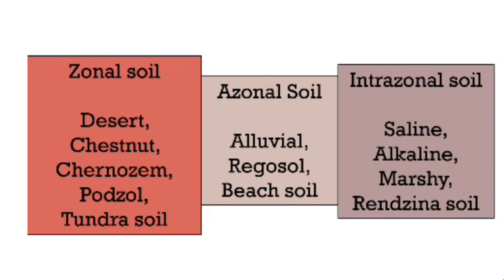Intrazonal soil is a soil that is not very clearly defined — examples include alkaline, marshy, peat, saline soil, and Rendzina. These are all examples of intrazonal soil. So with this we are done with the session today. Thank you so much and bye bye.